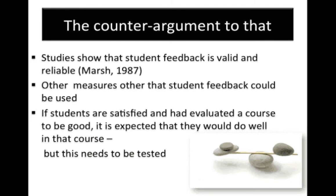Several studies have addressed these repeated questions. The paper by Marsh 1987 shows that student feedback is indeed valid and reliable. Other studies suggest that measures other than student feedback or student satisfaction can be used to determine the quality of education — for instance, we could use student performance. If students are satisfied and have evaluated a course to be good, then it is reasonable to expect that they would actually do well in the course. But this needs to be tested.